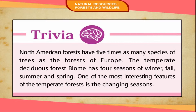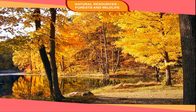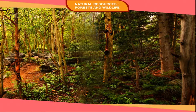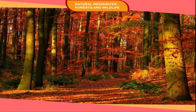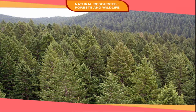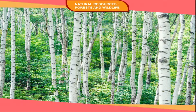The temperate deciduous forest biome has four seasons: winter, fall, summer, and spring. One of the most interesting features of temperate forests is the changing seasons. Temperate Deciduous Forests grow in regions where the climate is cool, oceanic, or temperate with no large extremes of climate. In winters, the temperature falls below zero, and plants shed their broad leaves in the autumn season. Douglas, maple, ash, and birch are the main species.